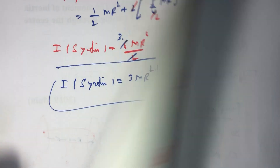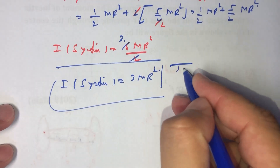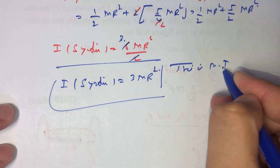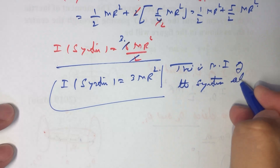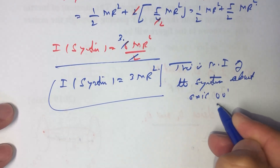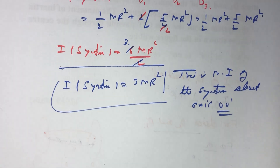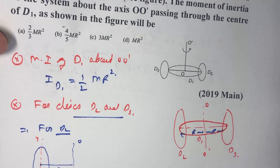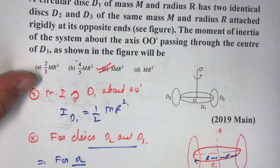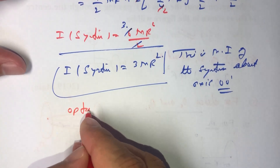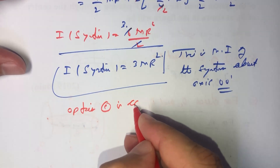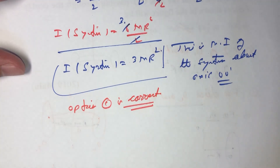So the moment of inertia of the entire system about axis OO' is 3mr². Looking at the available options, option C is the correct one. This completes the question. Thank you.